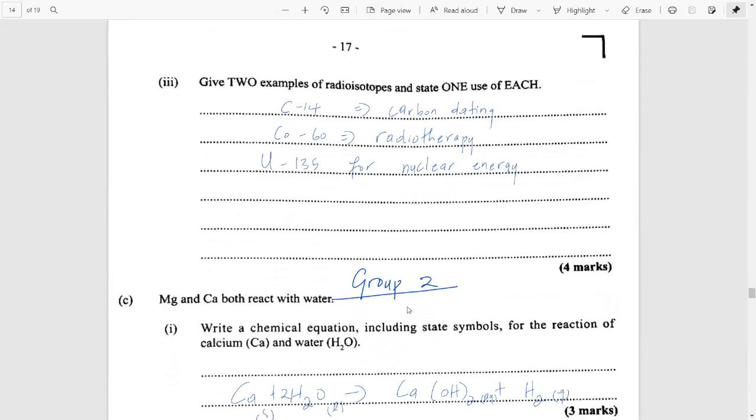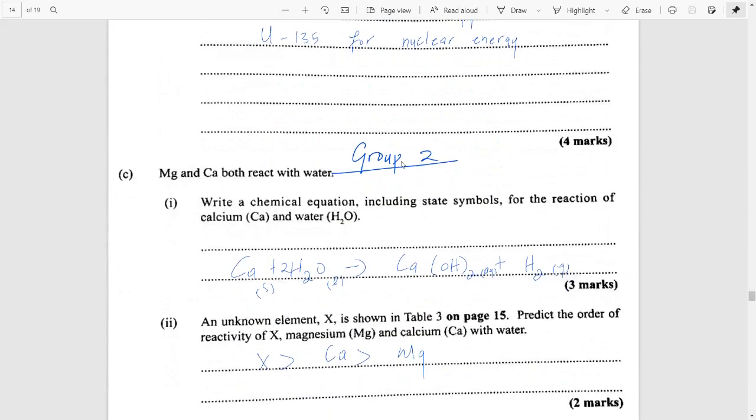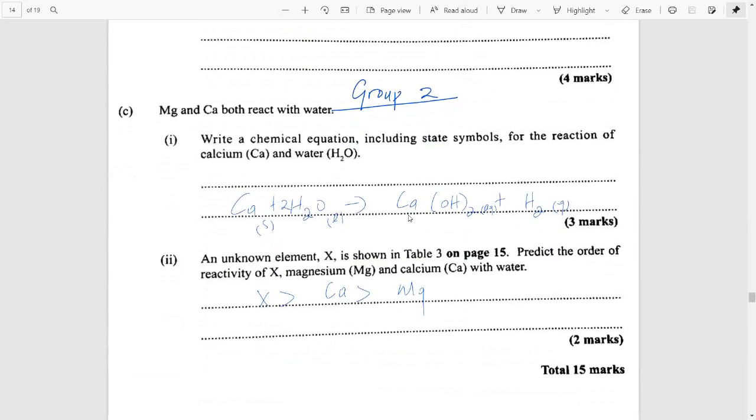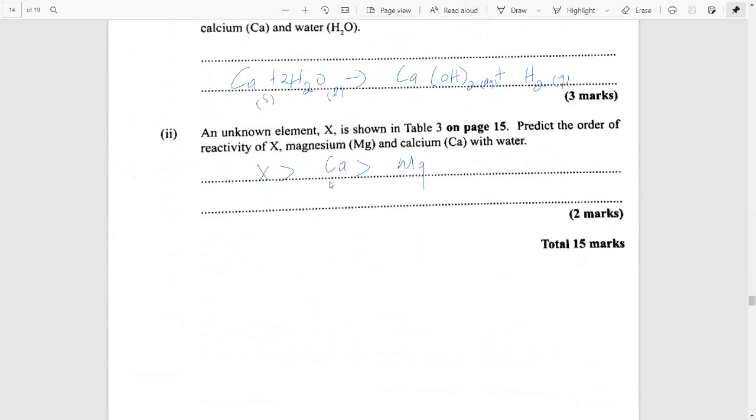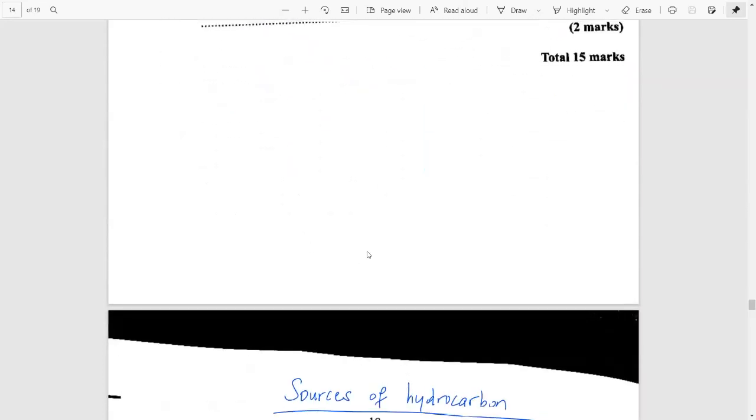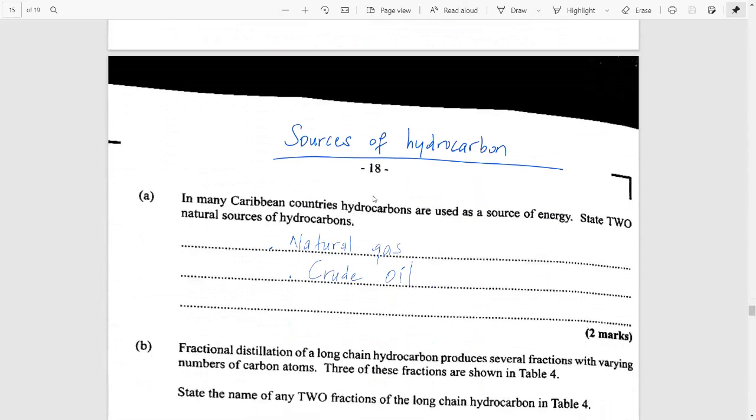You did have a question on group two as well. So, this comes on the periodic table, and I hope you were able to watch that module that we did on the periodic table in our marathons. And I hope you were able to show the reaction between calcium and water, forming calcium hydroxide and hydrogen. And then you were asked to show the reactivity of the elements in group two. And, of course, X being at the bottom would have been the most reactive element in group two, followed by calcium, then magnesium, according to what was shown here.